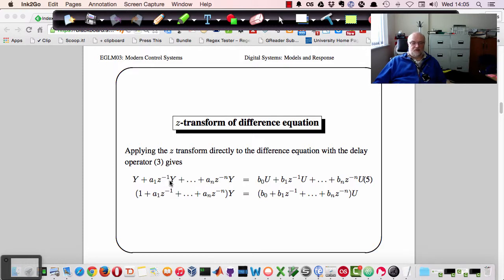So we've got y plus a1 times z to the minus one y, which is delayed by one, all the way down to an z to the minus n y, and so on on the left-hand side as well. Now this five here is an equation number, not part of this expression. So if we gather terms, put things in parentheses, then we've got this expression here, which represents what will be the denominator. And this is going to be the numerator of a transfer function y over u.